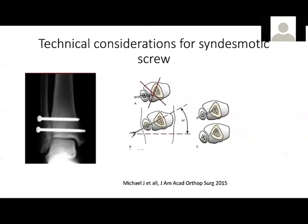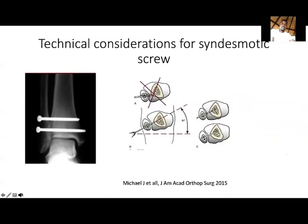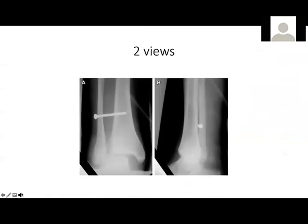The other issue is bioabsorbable versus steel screws, and the question of removal. Bioabsorbable screws have fallen out of favour because they start degrading before the ligament heals, taking you back to square one. People are now saying that using a suture button with FiberWire is biomechanically comparable to using screws, and has the advantage that you don't need to take the patient back to theatre for removal.